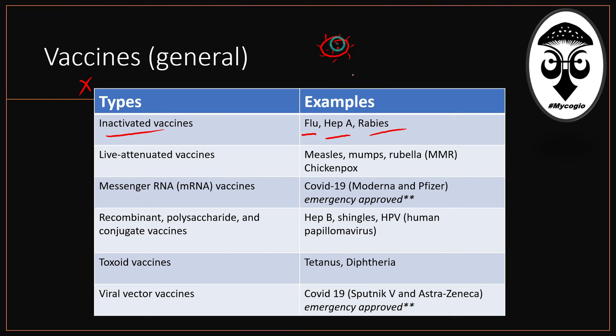With inactivated vaccines, you get the agent — let's say the virus — and it is completely inactivated, almost dead, and would not reproduce in your body. Your body sees it and creates antibodies against it. So if you encounter the active virus later, there are already antibodies ready to attack it. The live attenuated vaccines — measles, mumps, rubella — these are the MMR that all kids get from one to two years of age. These are very important vaccines.